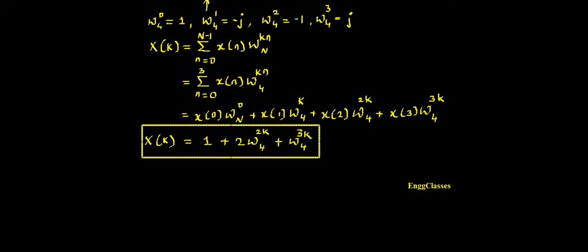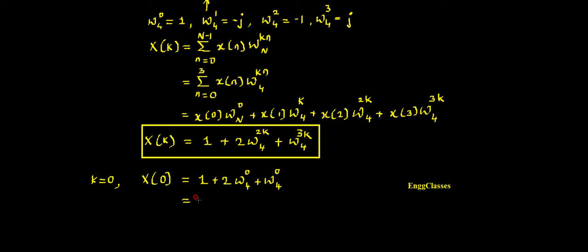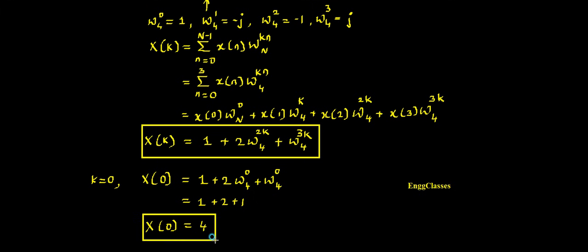For the first DFT coefficient, put k=0: X(0) = 1 + 2·W4^0 + W4^0 = 1 + 2 + 1 = 4. So X(0) = 4 is the first DFT coefficient.